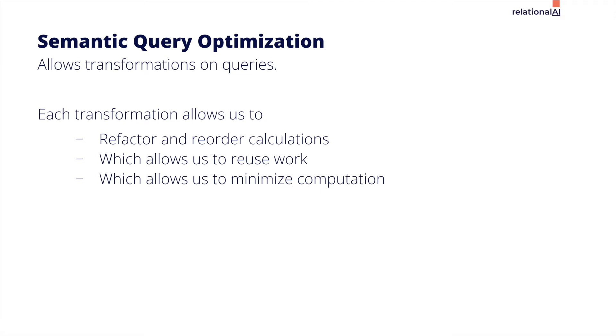GNF enables semantic optimization, but having many narrow tables increases the number of joins. It may seem counterintuitive as to how we can go faster if we have to do more joins.